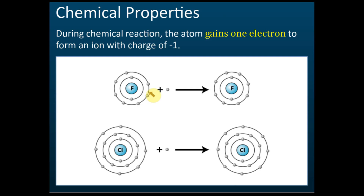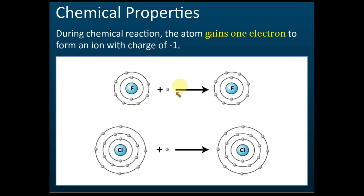Because it's not stable, the atom will try to attract or receive one electron. You can see there's no electron here, so it reacts and receives this electron. After receiving this electron, it becomes stable. During chemical reactions, the atom gains one electron to form an ion with a charge of negative one. This one is neutral, and after the reaction, having received electrons, the charge becomes negative.